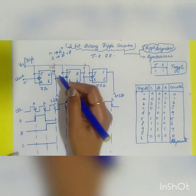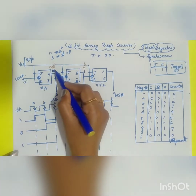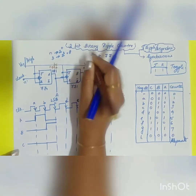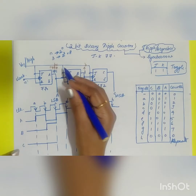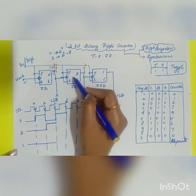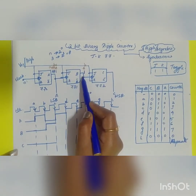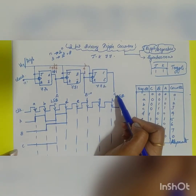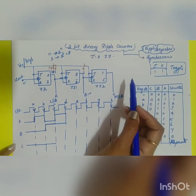During the next triggering pulse (C), flip-flop 0 toggles from 0 to 1, so A goes high. Since A is 1, this is a positive transition and there is no change in B or C. B remains high and C remains at 0.